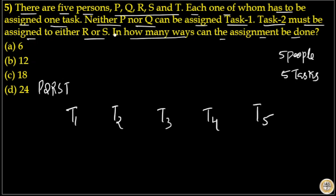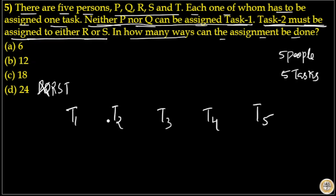In the question there are 2 conditions. The first is that neither P nor Q can be assigned task 1. So task 1 cannot be assigned to P and Q — the remaining 3 people are R, S and T.